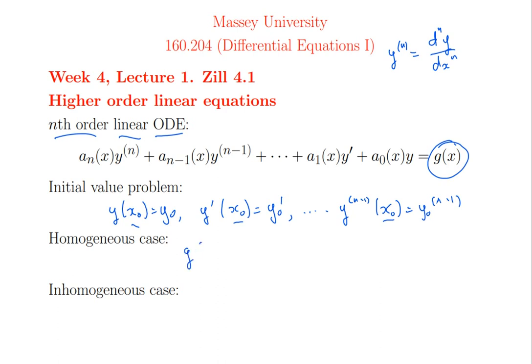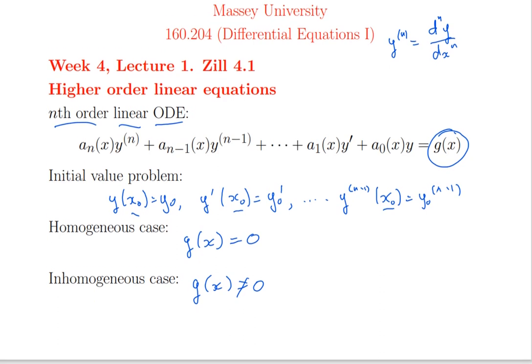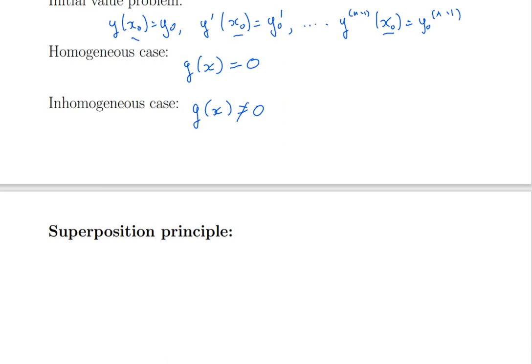Now, a lot is going to depend on this right-hand side here, the g of x. Sometimes it's called the forcing term. The homogeneous case is what we're going to do first, that's when g of x is equal to zero. And the inhomogeneous case is when it's non-zero, so when you do have something on the right. And we'll see in a second that to solve the inhomogeneous case, what you do is first forget about that and cross out that right-hand side and solve the homogeneous case first.